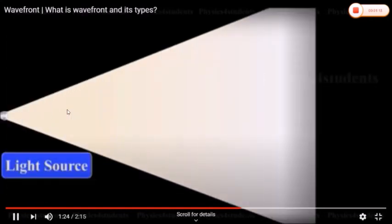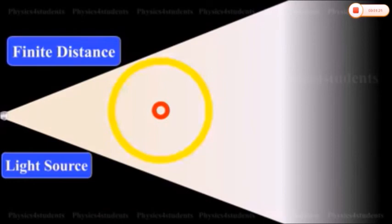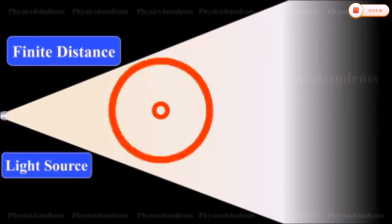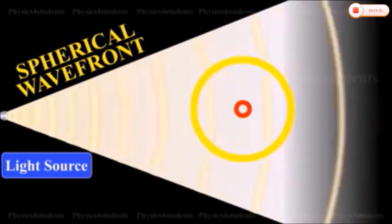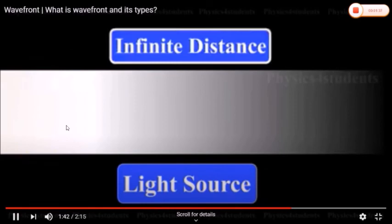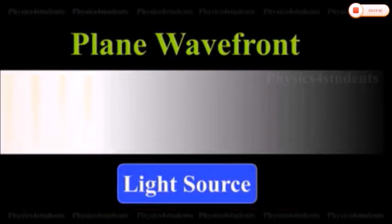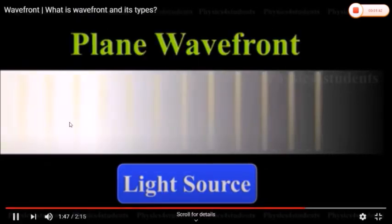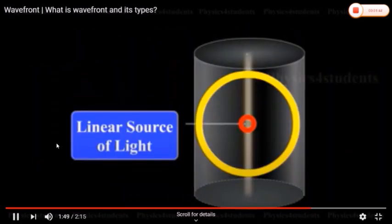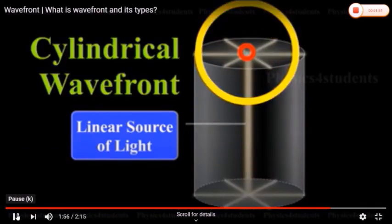A point source of light at a finite distance in an isotropic medium, which is a medium in which the light travels with the same speed in all directions, emits a spherical wavefront. A point source of light in an isotropic medium at infinite distance will give rise to plane wavefront. A linear source of light such as a slit illuminated by a lamp will give rise to cylindrical wavefront.